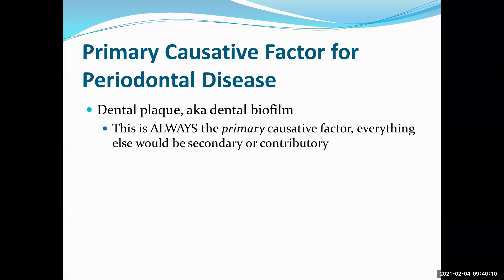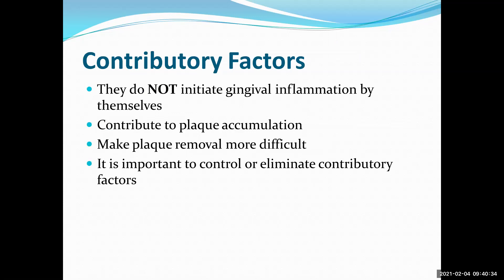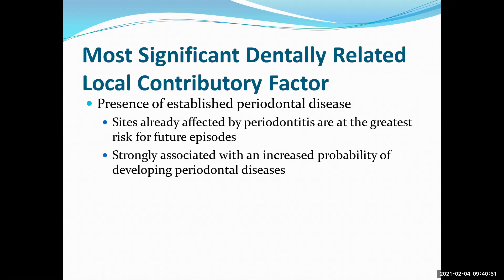The primary causative factor is biofilm — always. Can it be anything else? No. There are so few 'alwayses,' guys — this is one of them. Then we've got our contributory factors that don't initiate the inflammation but contribute to it. They make biofilm removal from plaque-retentive surfaces more difficult. The most significant dentally-related local contributory factors in the presence of biofilm are sites already affected by periodontitis — they have the greatest risk for future breakdown.